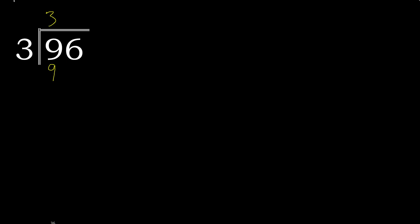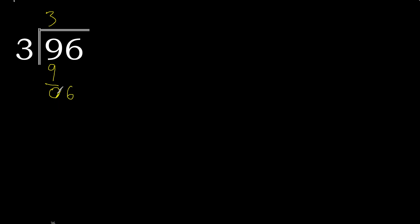9 is not greater. Subtract: 9 minus 9 is 0. Next, eliminate 0 on this side.